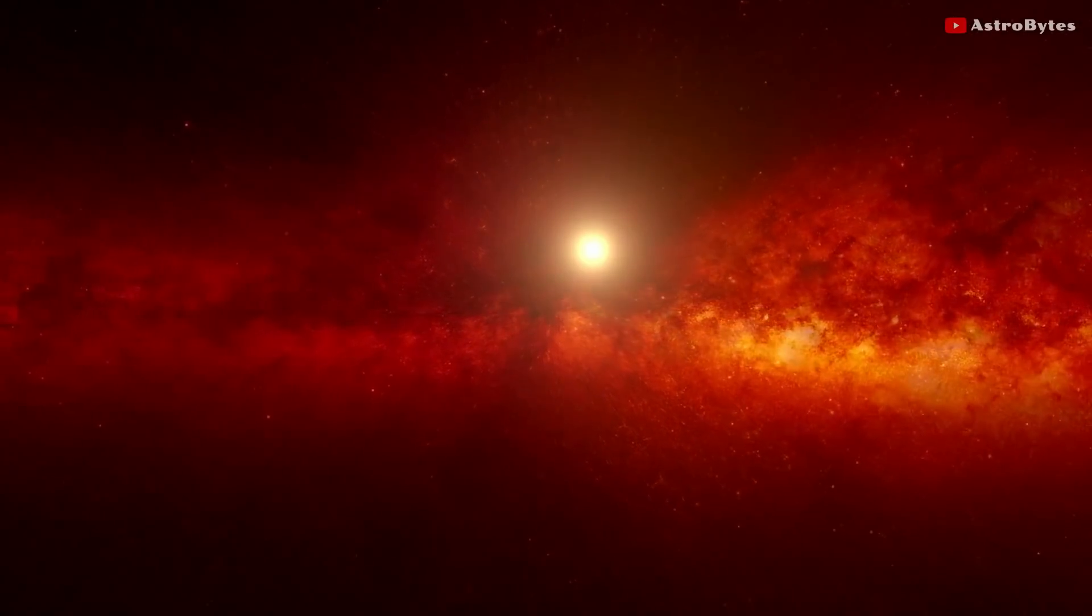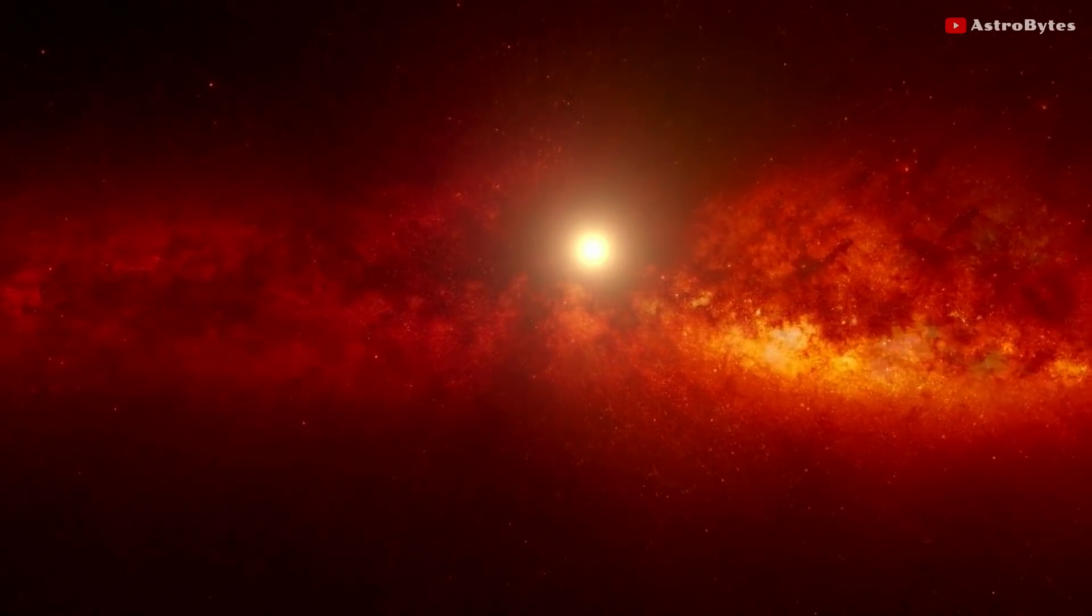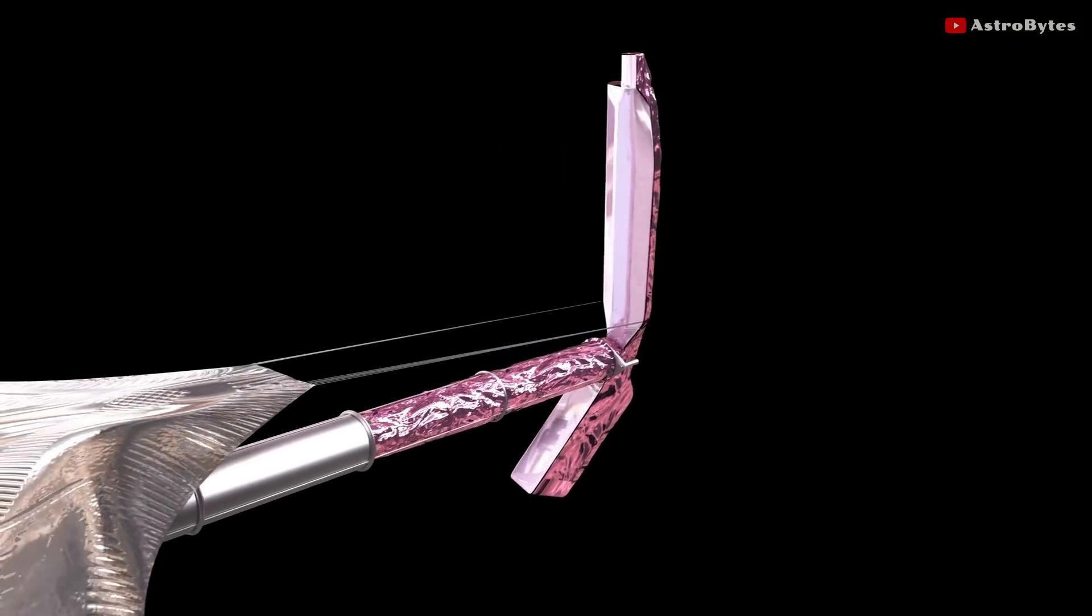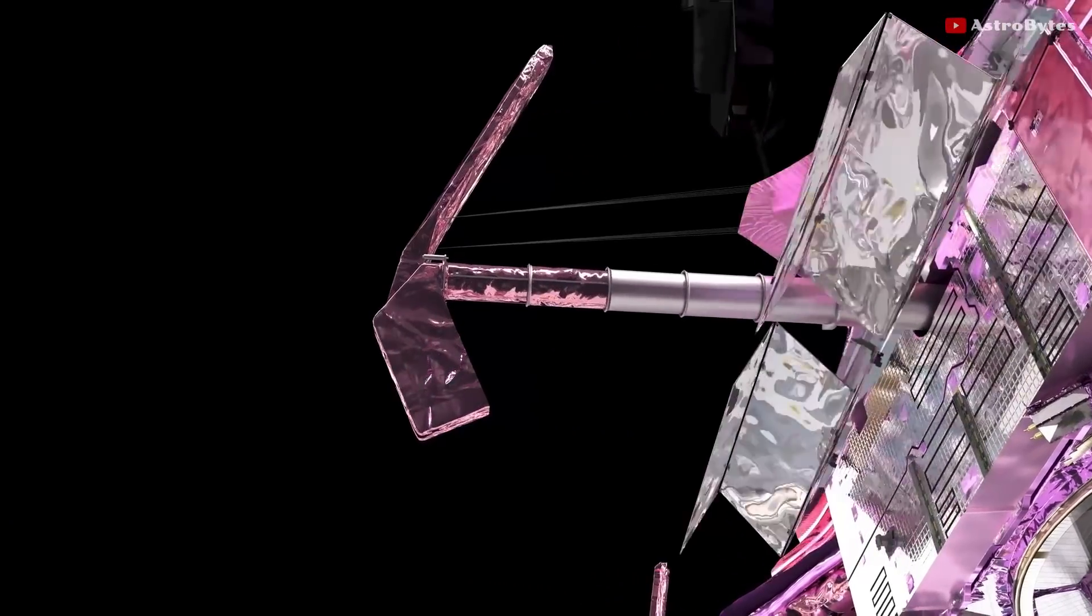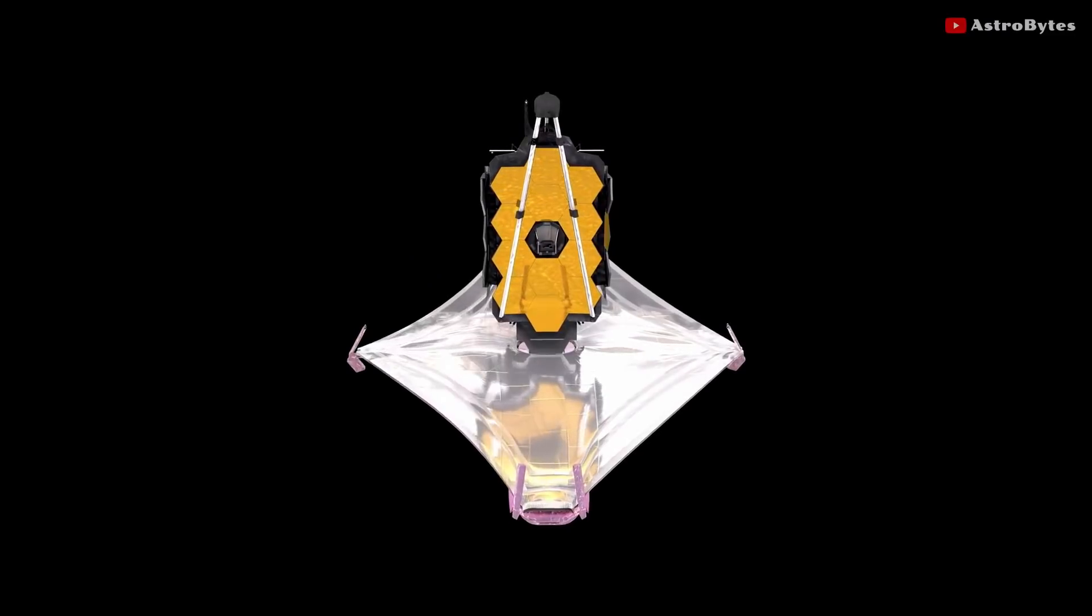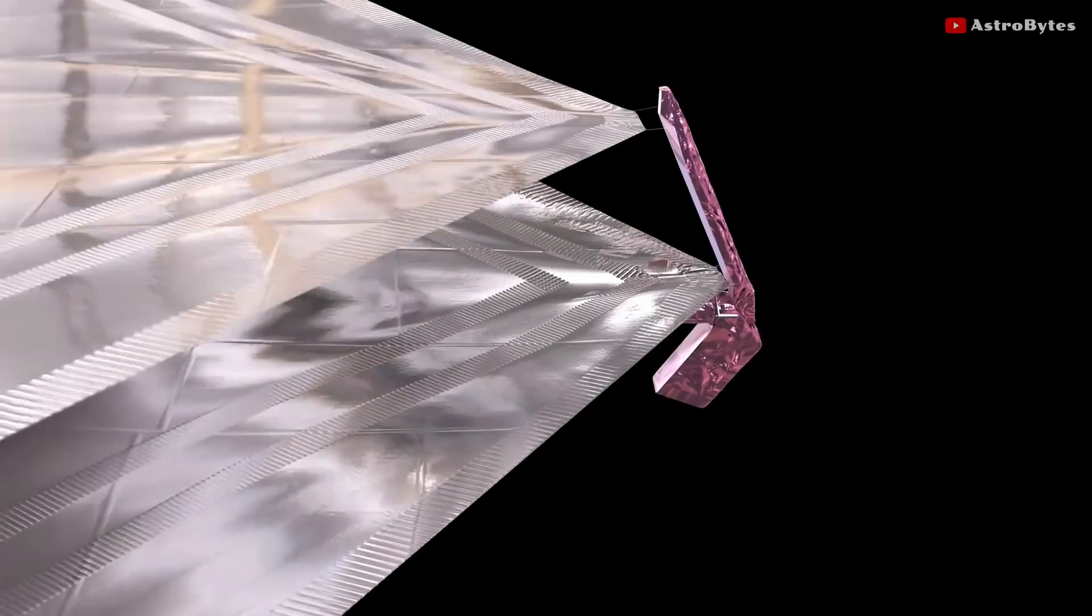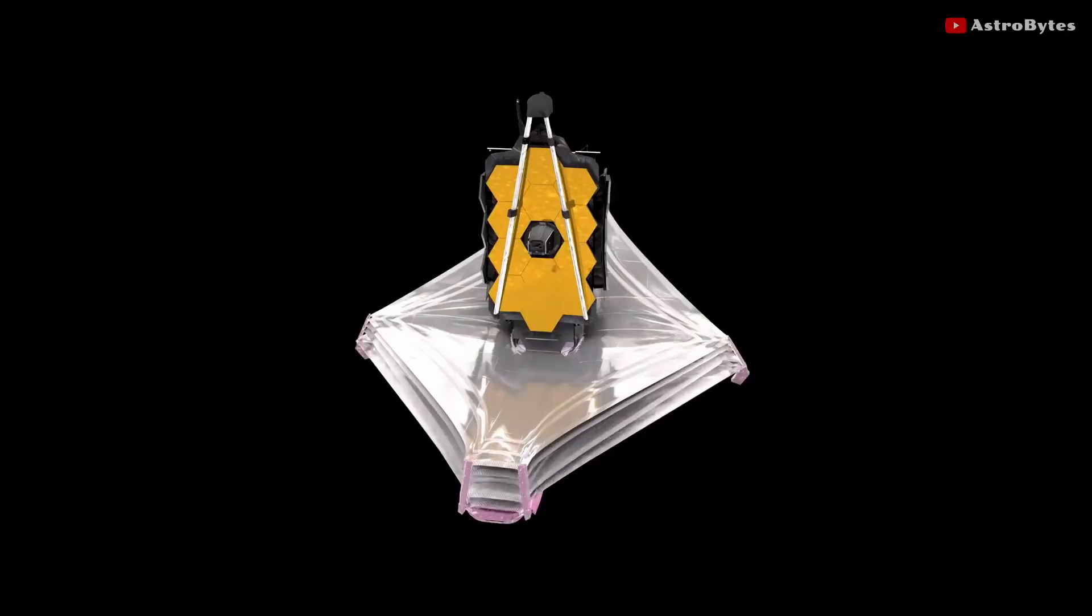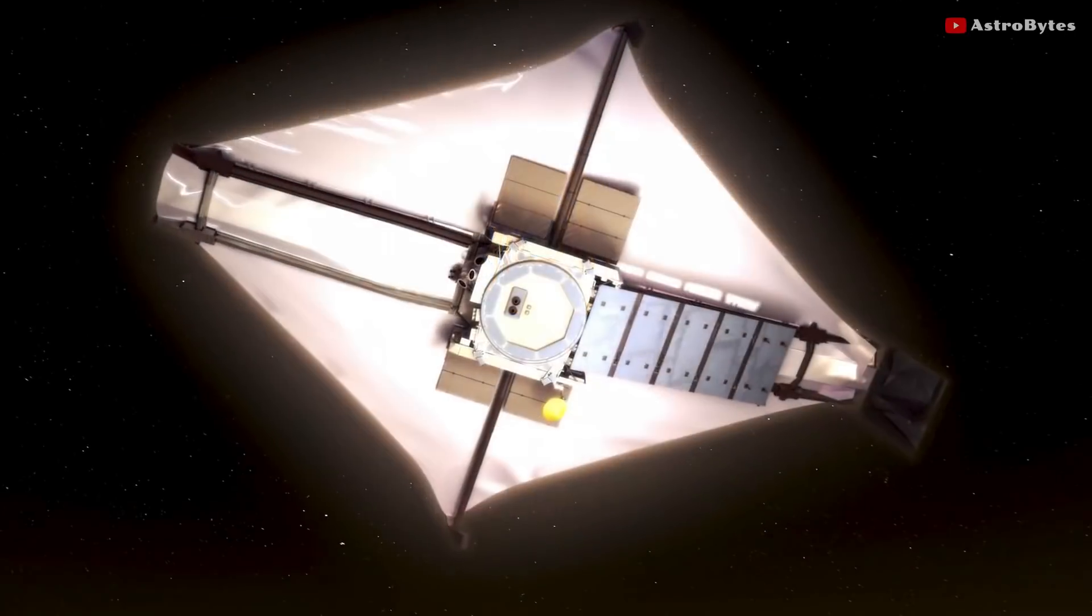The near-infrared camera will cover the infrared wavelength range from 0.6 to 5 microns. The camera has to first cool down to its operational temperature of minus 244 degrees Fahrenheit. It will take weeks for the instruments to reach their operational temperatures.